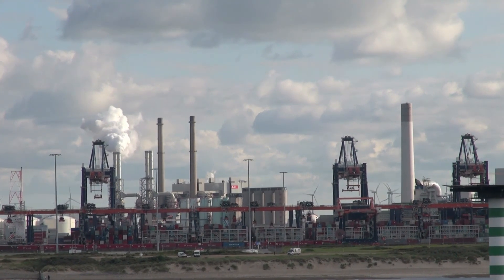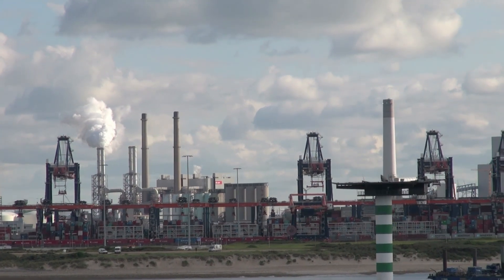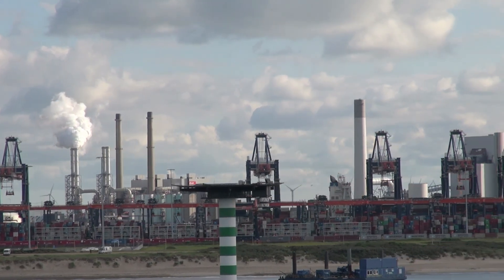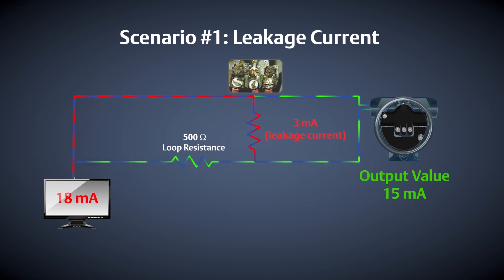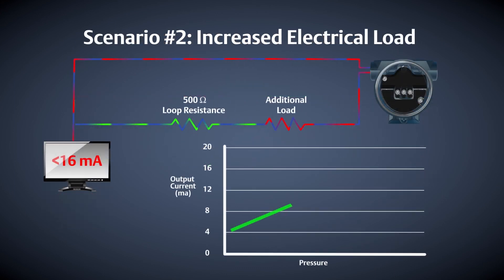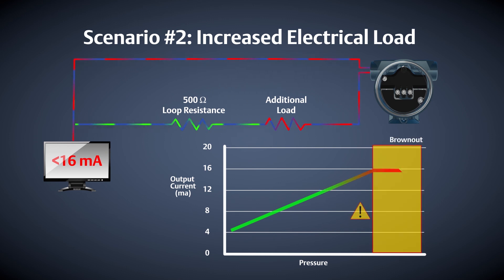You don't have the time or resources to perform regular manual loop checks, so you won't know that there is an issue until it's too late. If the milliamp signal is not being conveyed accurately, you may be making adjustments to final control elements that are not required, causing bigger problems. You also may not be able to bring your process to a safe state because you're unable to reach alarm levels.